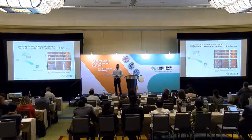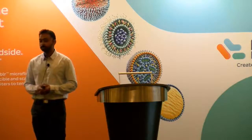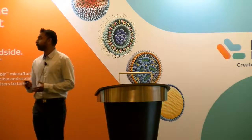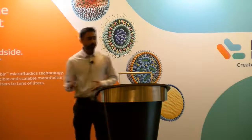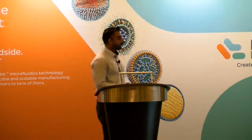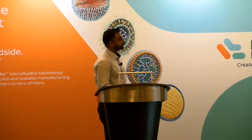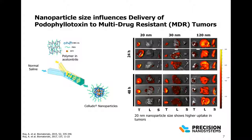They encapsulated a probe DiI into these nanoparticles to track them post-injection. They injected these into tumor-bearing mice and tracked them over various time points. Looking at the ex vivo images — T is for tumor, L is liver, S is spleen — you can clearly see that the 20 nanometer particle shows much higher accumulation at the tumor site compared to the 30 or 120 nanometer particles, which show much higher accumulation in RES organs like the liver and spleen.